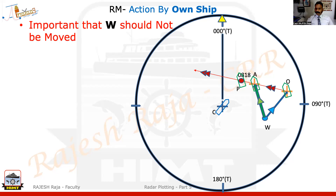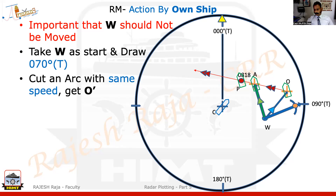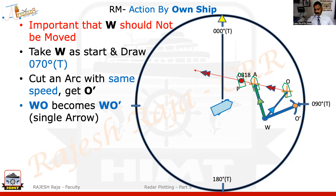Now I need to find out what changes happen after 0818. At 0818 I'm changing my course from 040 to 070. Very important — the course change was done by own vessel. So own vessel's vector, the original vector is WO. Please remember, do not touch W. If any change happens, it should happen to O. I'm going to start from W and draw a new line called the new course W to O dash at 070. The engine speed was not touched in this question, so the engine speed remains the same. I'm going to mark the same length of WO here also and call this O dash.